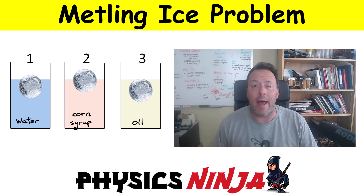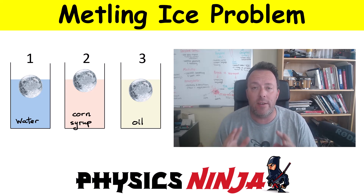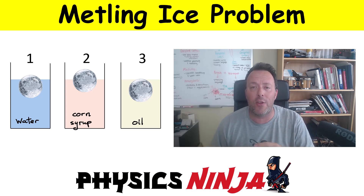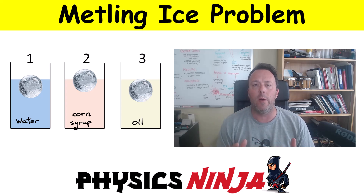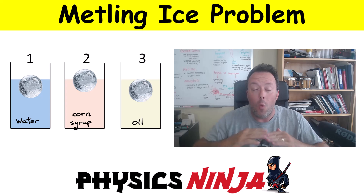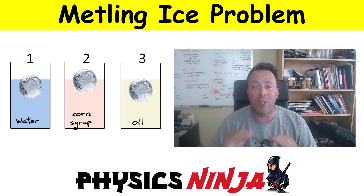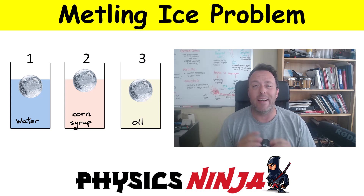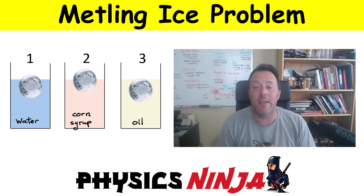In that video we looked at a giant ice ball and I placed the ice ball in three different fluids. We had water, we had corn syrup, and the third case was the ice ball floating in vegetable oil. The question was: what happens to the level of the fluid when the ice ball completely melts? We're going to highlight the key concepts so you get a full understanding of why we saw those results.